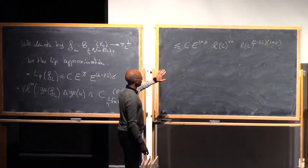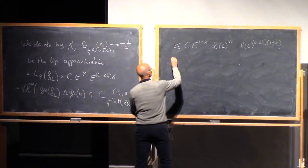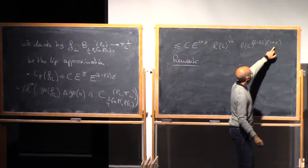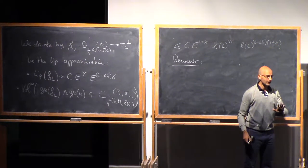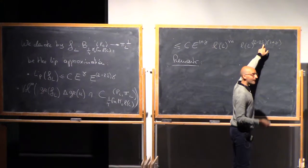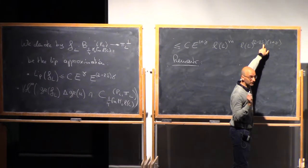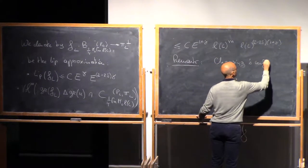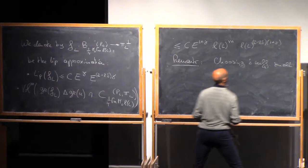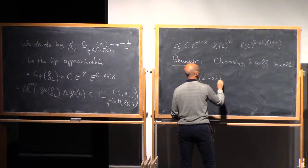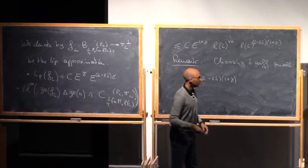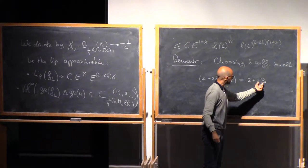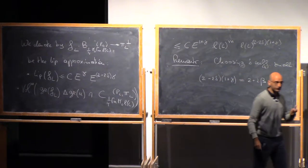The key remark is that γ is a fixed dimensional constant from the Lipschitz approximation, and δ is up to us to choose. We cannot choose δ equal to zero, but we can choose it close to zero. So choosing δ sufficiently small, we can actually get that (2−2δ)(1+γ) is strictly bigger than 2 — in fact something like 2+2β. So we are gaining something over 2, and this will be related to our C^{3,β} estimates.